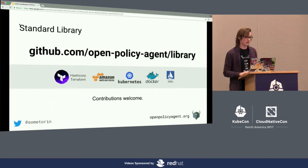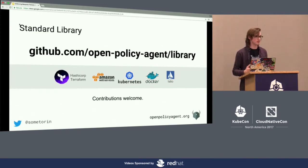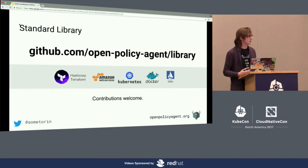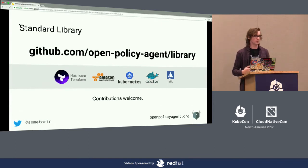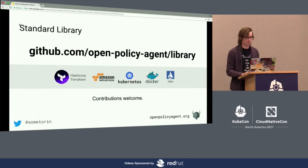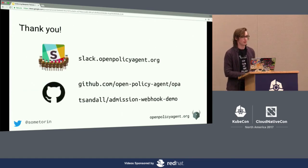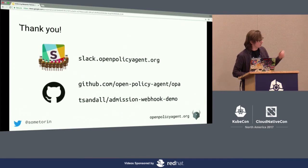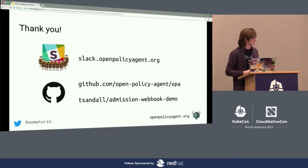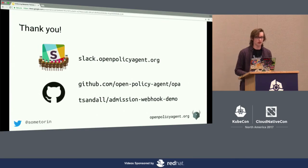The last thing I'll point out is that what enables all of this is the extensibility that's been added into Kubernetes. When you're thinking about designing these kinds of systems, think about extensibility and think about decoupling policy decisions from policy enforcement. Thank you very much. If there are questions, I'm happy to take them. Please go to the OPA repo and star it — the code from this demo is all online.